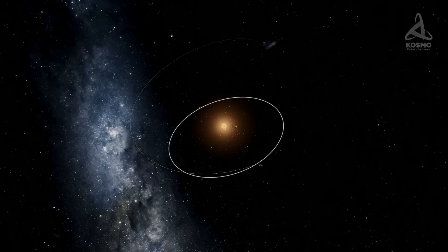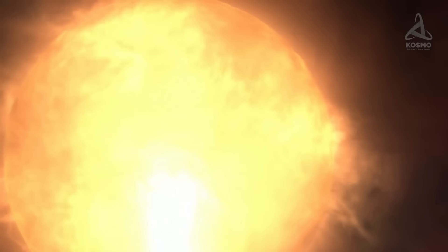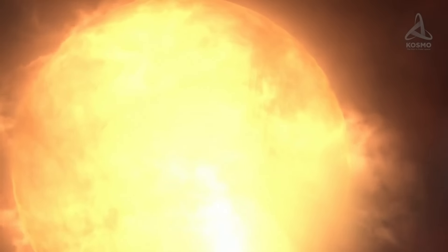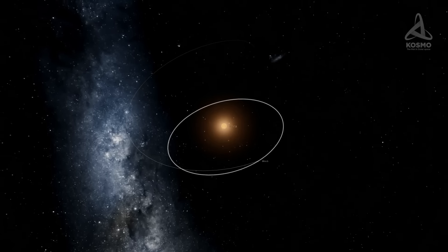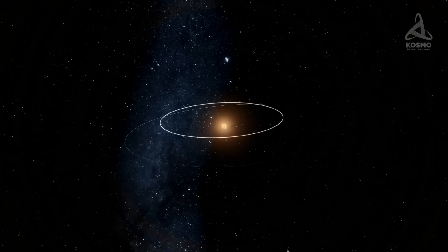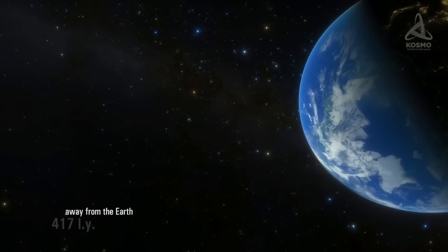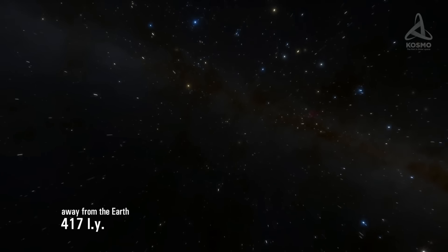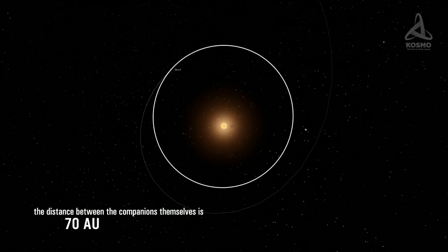Billions of years ago, this object used to be a yellow dwarf. Today, Mira's stellar travels are coming to an end, as it is now in one of the final stages of a star's life. Its system comprises two stellar companions: Mira A, a red giant, and Mira B, a white dwarf. Both objects are about 417 light-years away from Earth, with the distance between the companions themselves at 70 astronomical units.